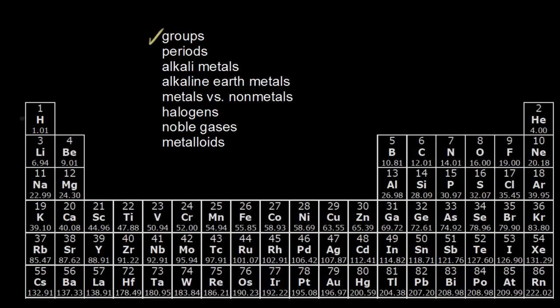The groups are the vertical columns on the periodic table. If I go over here, I can see that all of these elements are in the same vertical column. All of these elements are in the same group, and we call this group one. I can see that all of these elements are also in the same column. All of these elements are in the same group, and we call this group two.